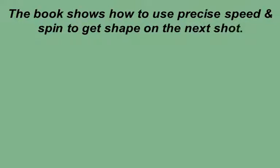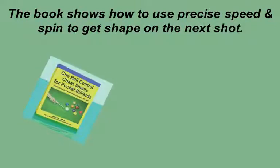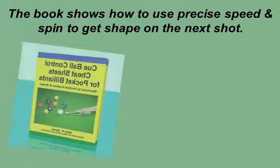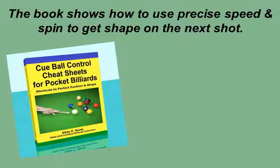The book shows how to use precise speed and spin to get shape on the next shot. The book has 12 groups, each with a dozen sets of several shots. Six groups are about getting shape within a half table area. Six groups require full table maneuvering.